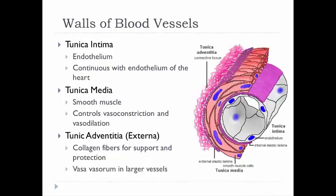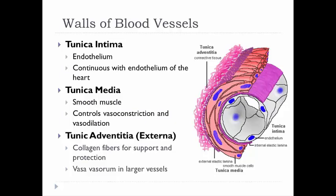The walls of the blood vessels consist of three layers. First is the tunica intima — the innermost layer, containing endothelium continuous with the endothelial layer of the heart, giving one smooth layer throughout the cardiovascular system. Then there's the tunica media, mostly smooth muscle to control vasoconstriction and dilation. And the tunica adventitia, also called the externa, has mostly collagen fibers for support. Very large vessels also have a miniature circulatory system called the vasa vasorum.